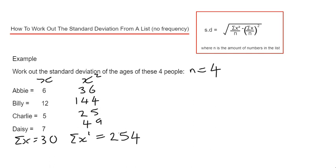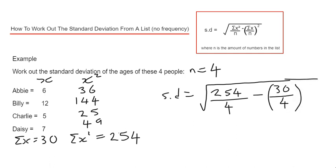We can now put these three numbers into our standard deviation formula. It is the square root of sigma x squared, which is 254, and we're dividing that by n, which is 4, minus sigma x is 30, and again we're dividing that by 4, and we need to square that. You should be able to type this in exactly as it appears on a scientific calculator using the fraction key and the brackets.